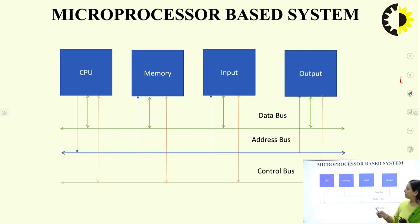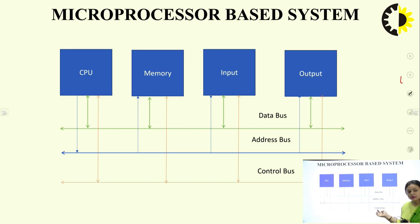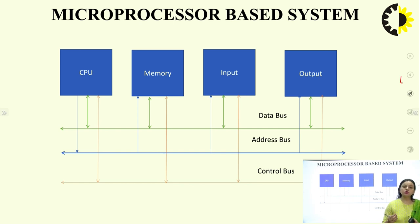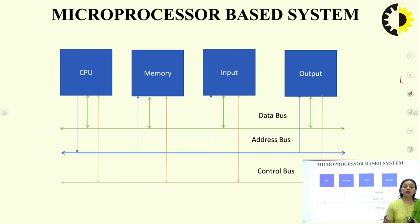In a microprocessor-based system, the CPU, memory, and input/output devices are connected by three sets of buses: data bus — a bidirectional bus carrying data between devices; address bus — a unidirectional bus carrying 16-bit memory addresses; and control bus — carrying timing and synchronization signals. If reading data from memory, the control bus must carry a read signal.